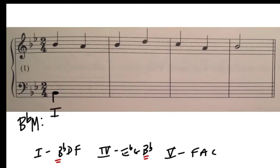Next we have an A, and that only could be the third of the dominant. So it's really clear that our next chord is the dominant, and F is the root of the dominant chord. We're only putting roots in the bass, so we're not putting A's or C's.